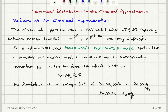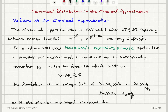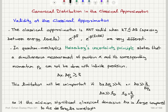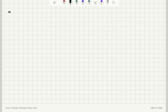So basically what we need to check is the minimum significant classical dimension. If that minimum significant classical dimension delta x is much larger than the de Broglie wavelength of the particle, then quantum mechanical effects are going to be negligible.